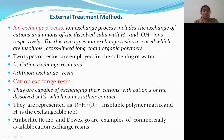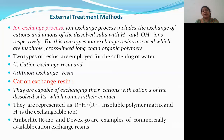Cation exchange resins have the capability of exchanging their cations with other cations which come into contact with them. They are represented as R-H, where R is the insoluble polymer matrix and H is the exchangeable ion. Commercially available examples include Amberlite IR-120 and Dowex 50.